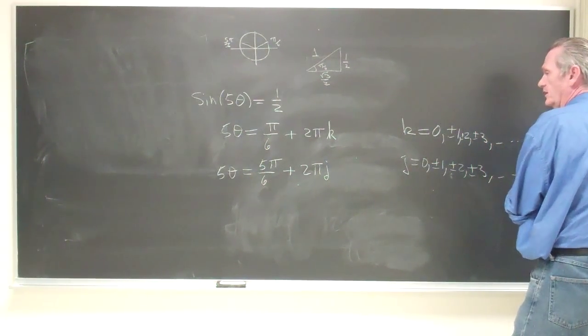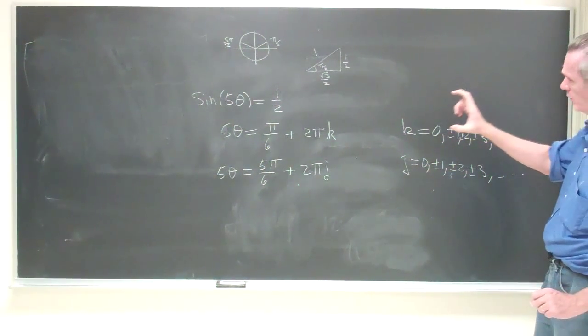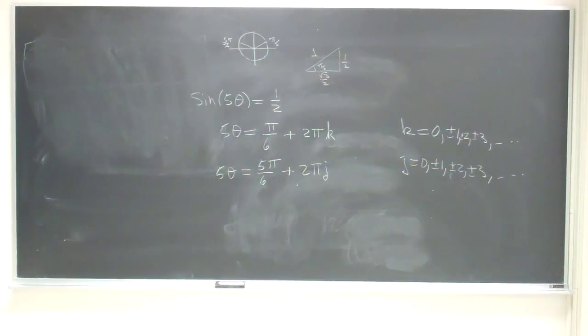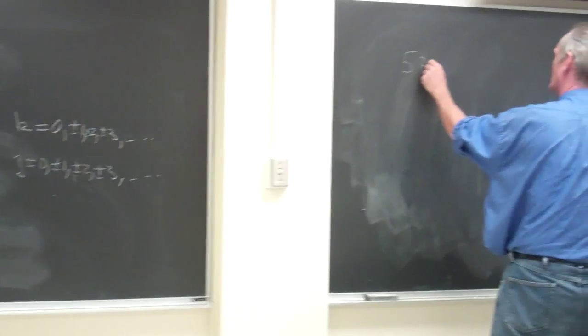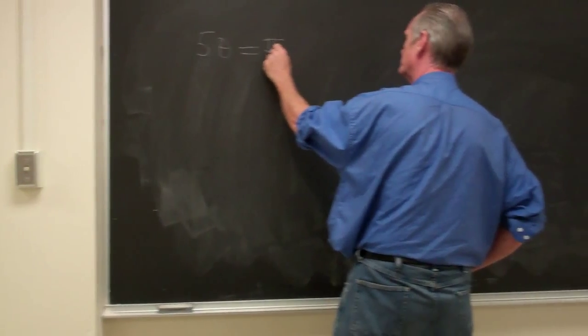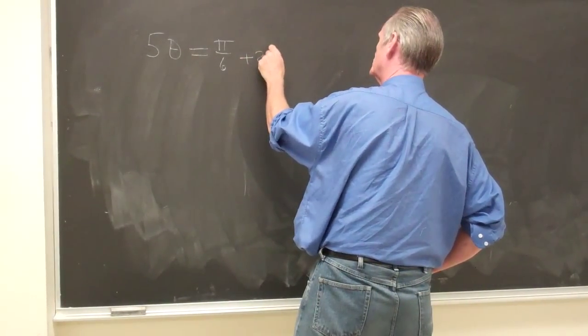Those go on forever, and now we're going to solve for those angles, so we get 5 theta, in the former case, 5 theta is equal to pi over 6 plus 2k pi.